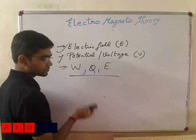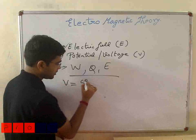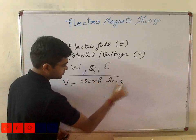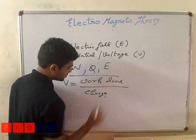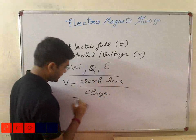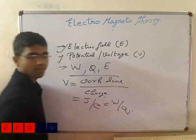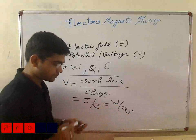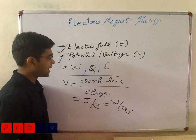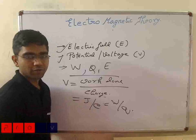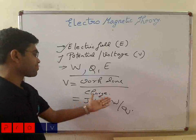So what is V? V is nothing but work done per unit charge. Work done is given in joules and charge in coulombs, so it is basically W divided by Q. This is a very fundamental kind of formula.